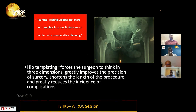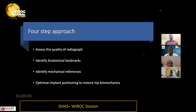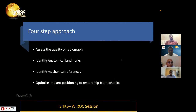One can anticipate the need for special implants and the varying needs of offset and neck lengths for that individual patient. Conventionally this was described as a four-step approach: assessing the quality of the radiograph, identification of anatomical landmarks, identification of mechanical references, and optimizing implant positioning to restore hip biomechanics.